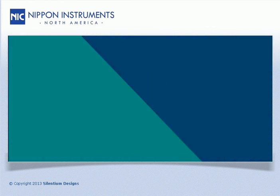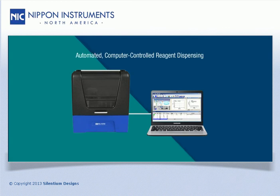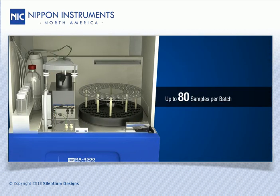The RA4500 has the capacity to dispense up to 6 different digestion reagents and it can analyze up to 80 samples at a time.